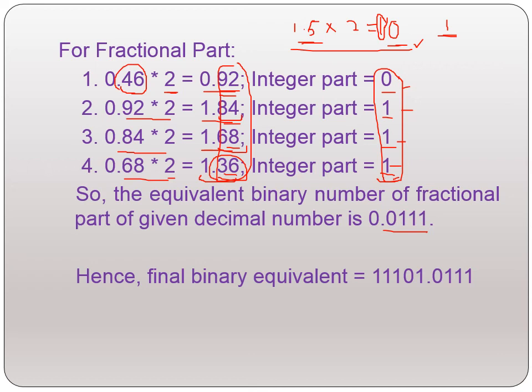Our decimal number was 29.46, so the final binary number combining both the integer and fractional parts will be 1 1 1 0 1 . 0 1 1 1.